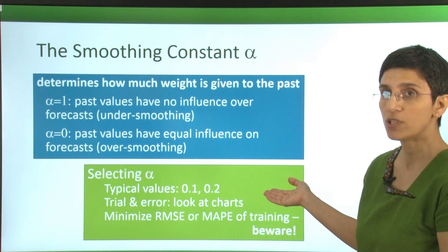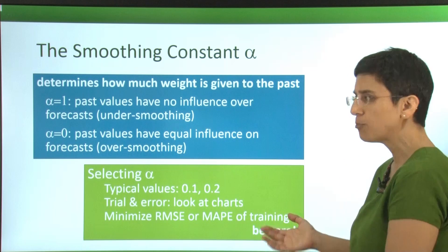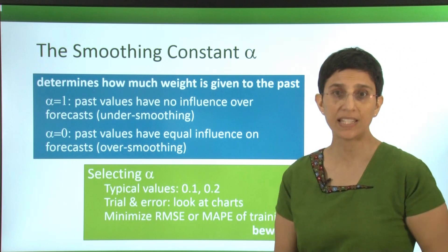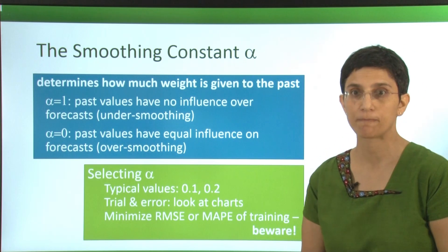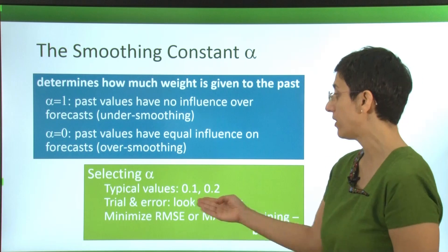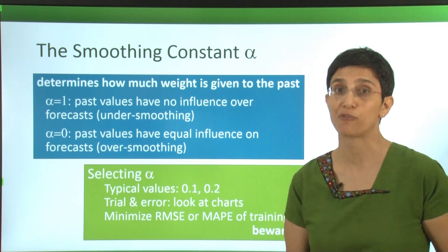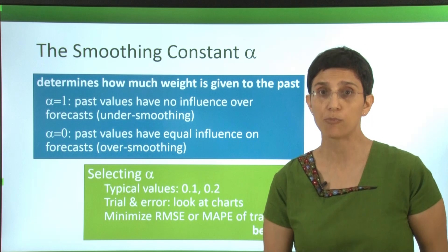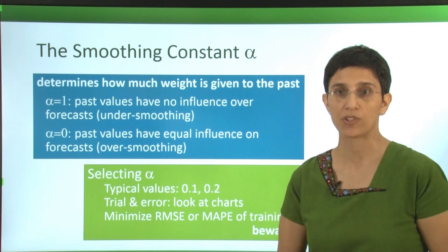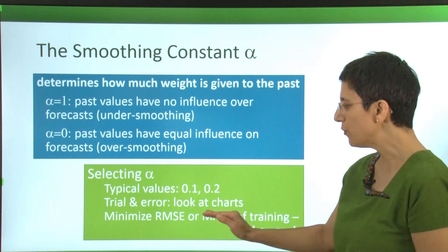That's why we typically choose something between 0 and 1 and usually closer to 0 than to 1. Typical values that are used in industry are around 0.1 or 0.2, and you might see that also in software defaults. Another way to set alpha is by trial and error. You can try a few different values, compare the predictive performance, and see which ones work better.